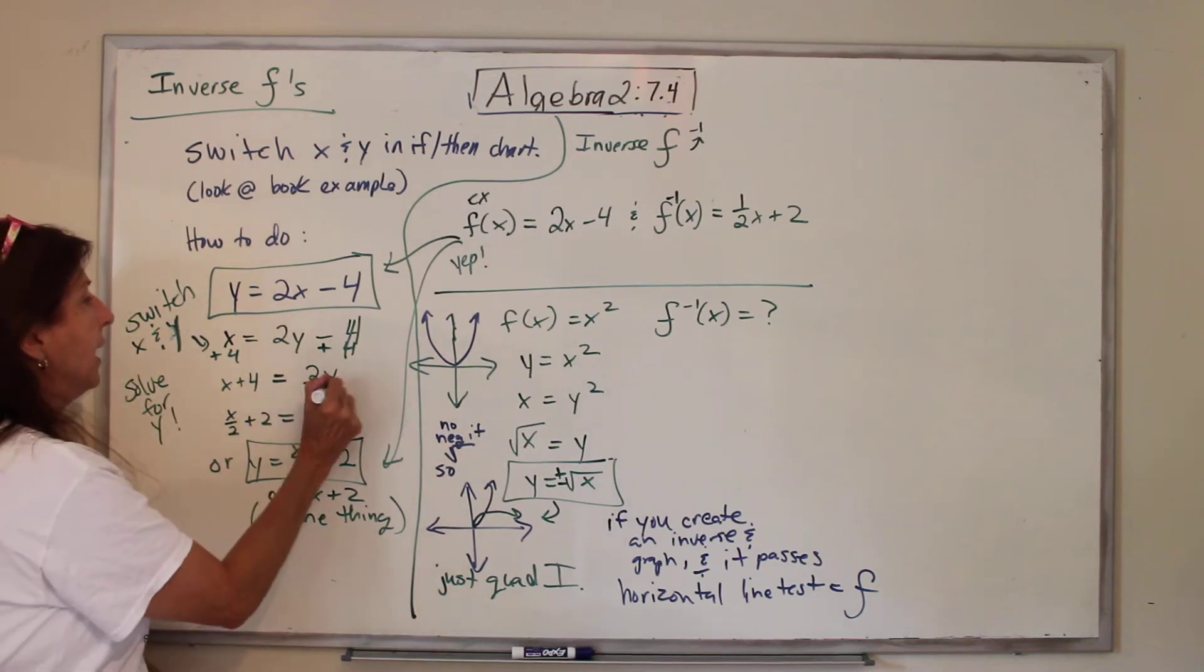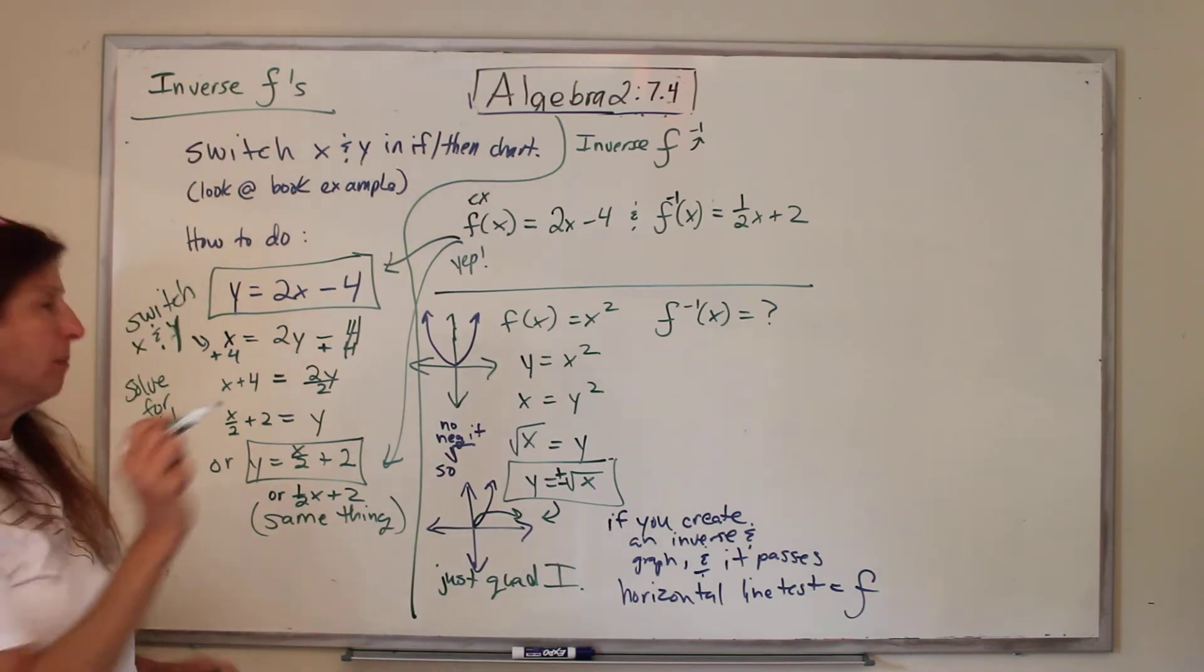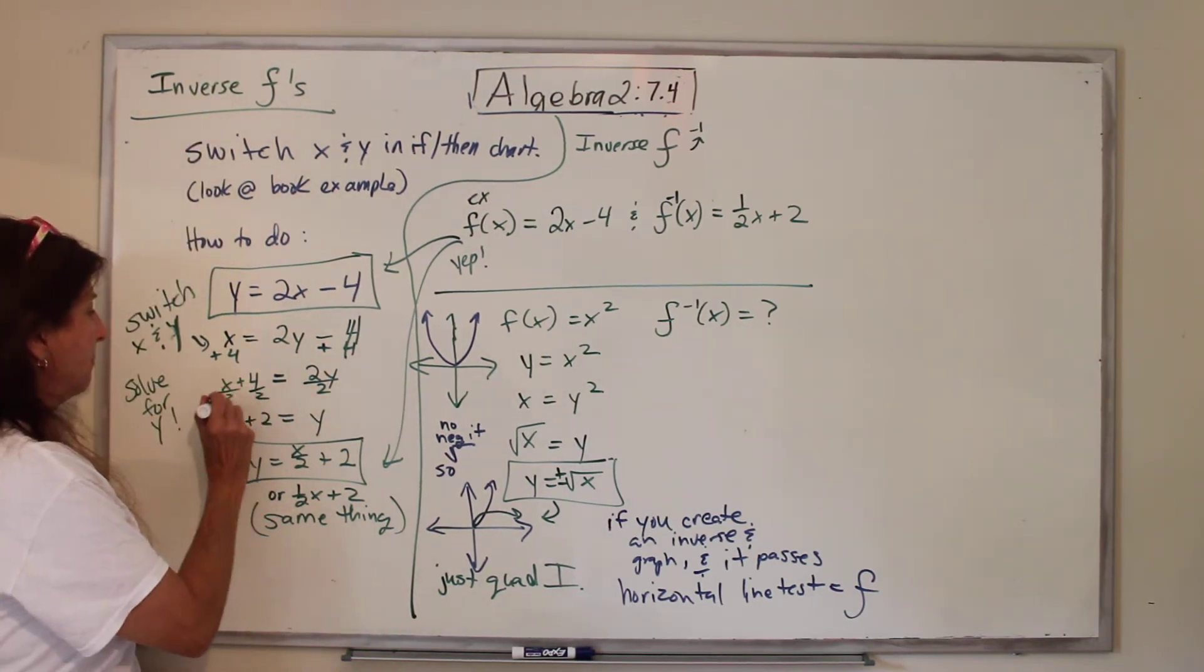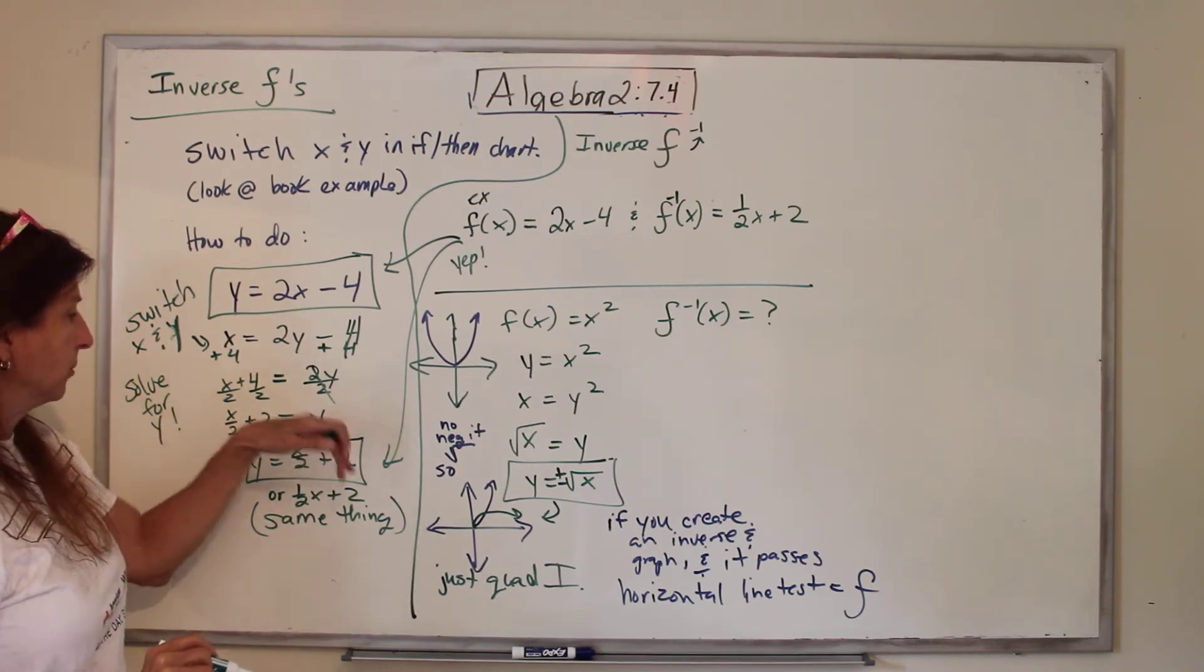Y is not alone. It's multiplied by 2, so we divide by 2. Who gets divided by 2? Everybody! It's a pirate party! You get divided by 2, and you get divided by 2. So X over 2 plus 2 equals Y.